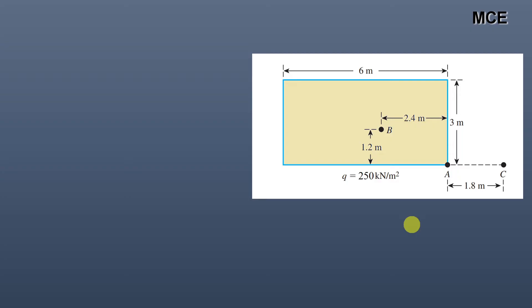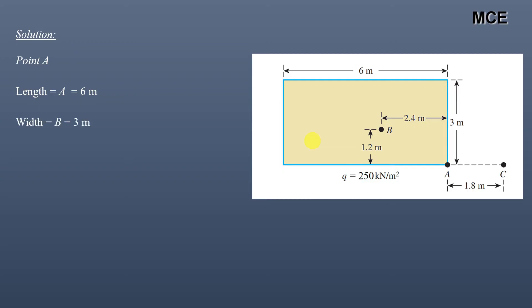First, we will find the stress increase at a depth of 3 meters below point A. Point A is at the corner of this yellow shaded rectangle. For this rectangle, length a = 6 meters, width = 3 meters, and depth z = 3 meters. The coefficient m is the ratio of length to depth: a/z = 6/3 = 2. The coefficient n is the ratio of width to depth: 3/3 = 1. These two coefficients are used to find the influence coefficient from a table.